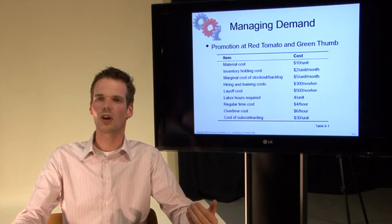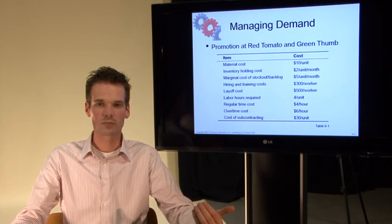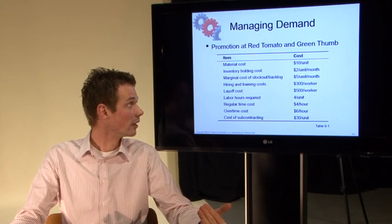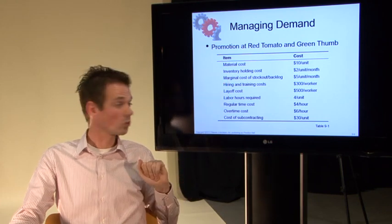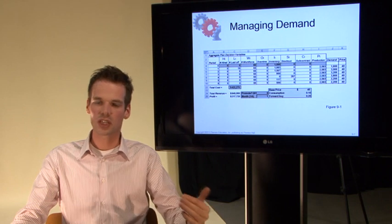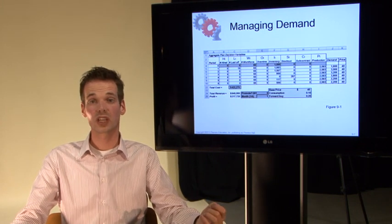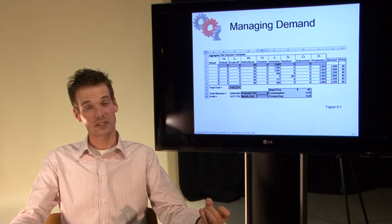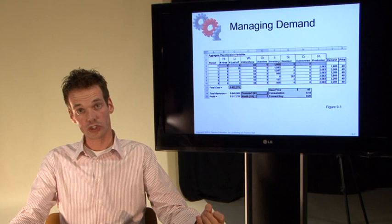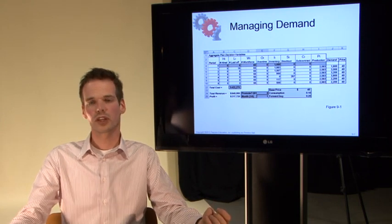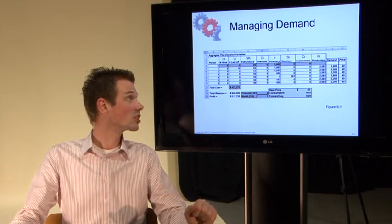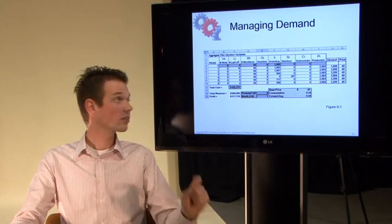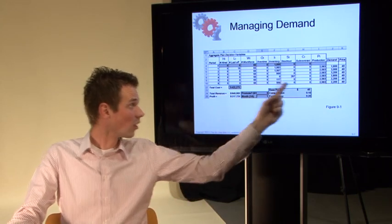We do that based on the example of Red Tomato Tools. Red Tomato Tools uses the following variables based on material cost all the way to subcontracting. When we input this into the Excel file also used in chapter 8, we come up with the profit, the revenue, and the cost of that particular product over time. All the input variables mentioned can be found here in the spreadsheet.